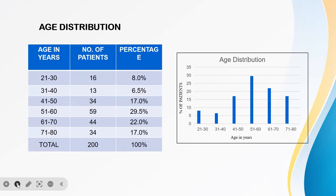This chart shows the age distribution. In this study, the age range was between 21 to 80 years, and most of the population was between 51 to 60 years, accounting for around 29.5%.